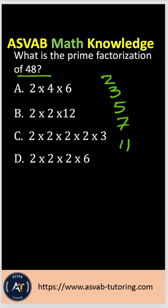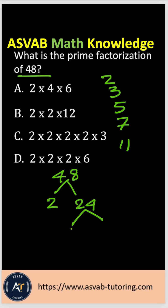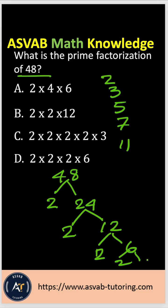Let's draw a factor tree and solve that. Starting with 48, always try to divide by 2 first. If you cannot divide by 2, then try by 3. So 48 divided by 2 is 24. Divide by 2 again gives you 12. Again by 2 gives you 6. Divide again by 2 gives you 3.